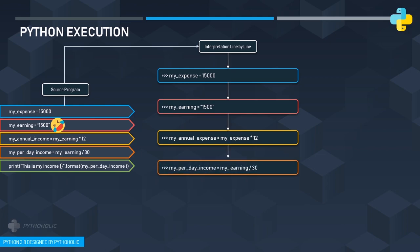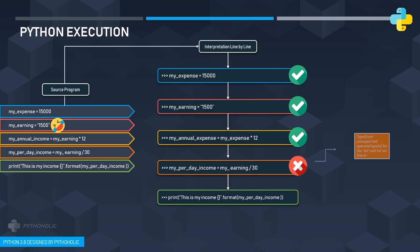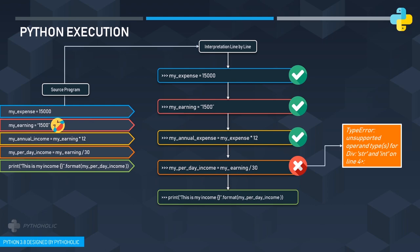Execution is fine for lines 1 through 3 — basic assignments and arithmetic. When it reaches line 4, an error occurs because in Python you cannot divide a string by an integer. Since 'my_earnings' is 1,500 as a string and we try to divide it by 30, it raises a TypeError. After that, any remaining lines will not get executed. This demonstrates how Python interprets the program line by line and throws an error at the exact point of failure.